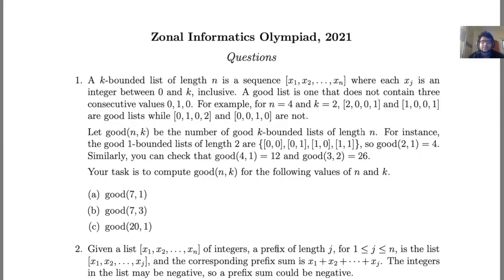Now, let good(n, k), so good is a function of n and k, be the number of good k-bounded lists of length n. So for instance, the good 1-bounded lists of length 2 are 0, 0, 0, 1, 1, 0, and 1, 1. So good(2, 1) equals 4. And so we're given some extra values of good so you can cross check. So now our task is compute good(n, k) for the following values of n and k.